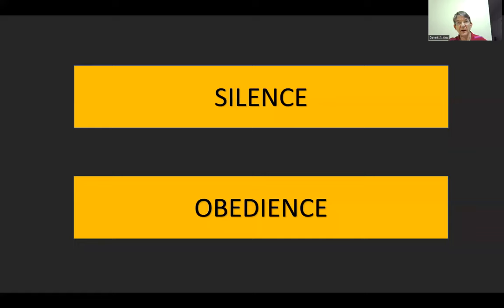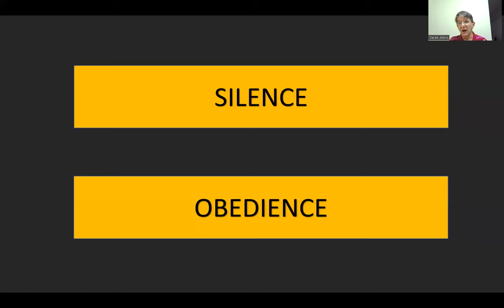Two key virtues emphasized in the monastic life were humility and obedience. Silence was considered part of the virtue of humility. The reason silence was emphasized so much in some monastic communities is because they viewed talking too much as a sign of lack of self-control and also a sign of pride — evidence that you had too much self-regard and thought too highly of yourself.